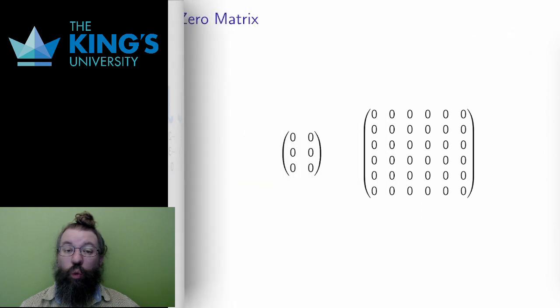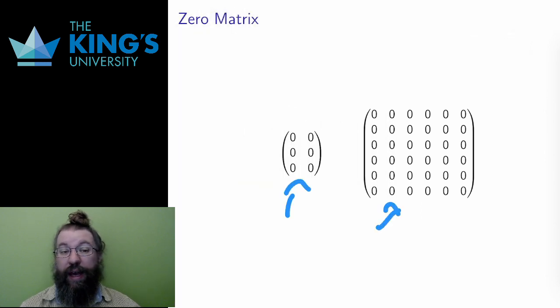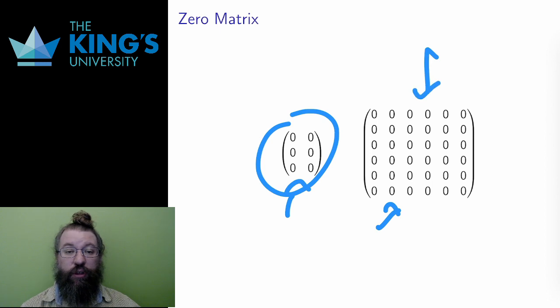A matrix that only has zeros in it is called the zero matrix, and there is a unique zero matrix for every size. This is the 3x2 zero matrix, and this is the 6x6 zero matrix.